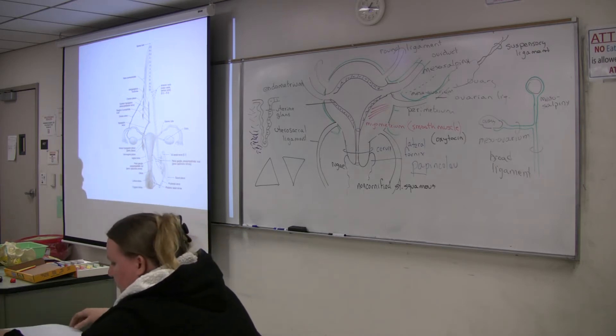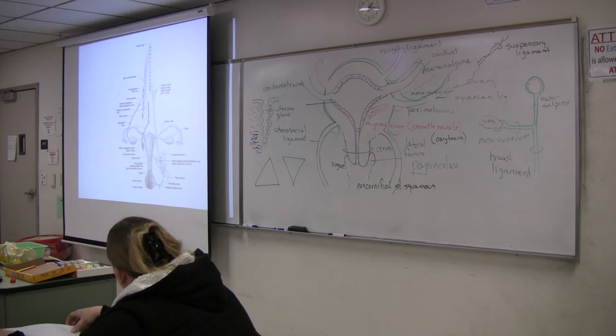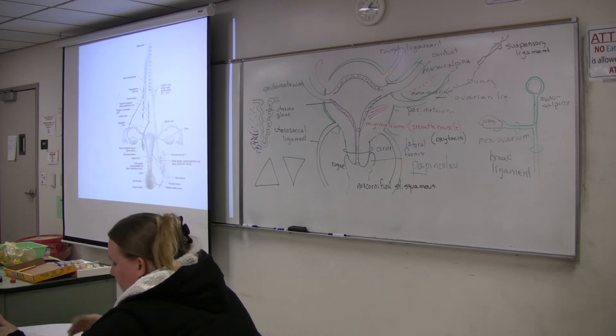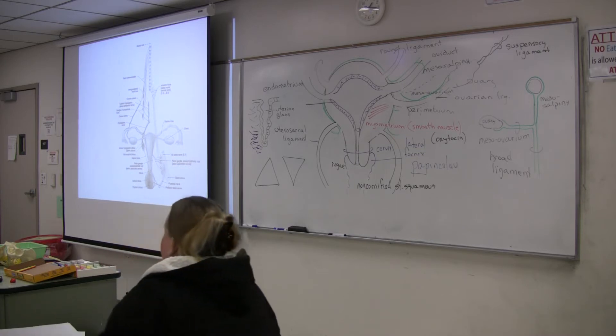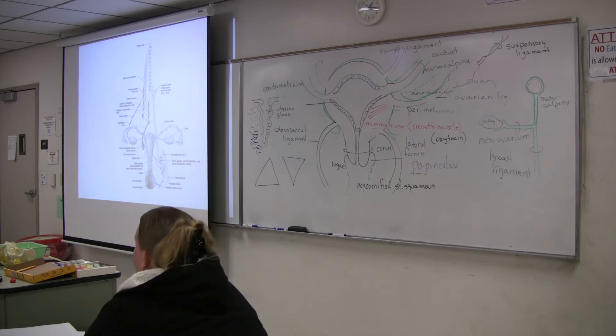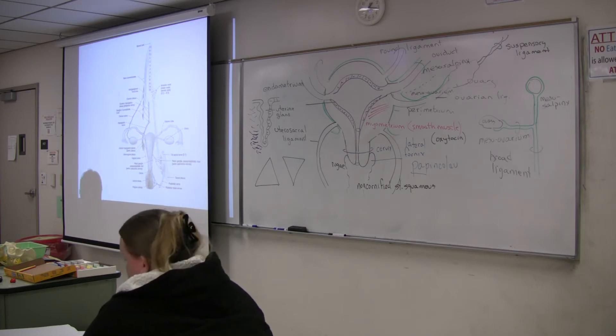Now in the male we talked about erection, emission, and ejaculation. Does the female have erections? Yes. What part of the autonomic nervous system, what are the nerves involved in erection in the male? Parasympathetic. Which splanchnic nerves? Pelvic splanchnic nerves. Causing the arterioles to relax and dilate. Same thing happens in the female, but on a smaller scale.